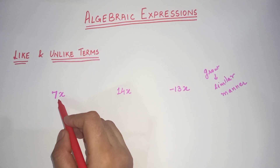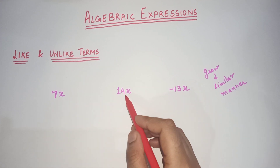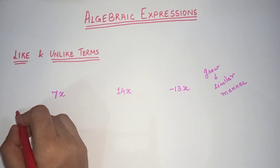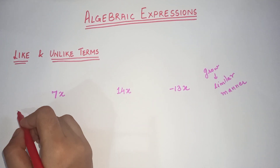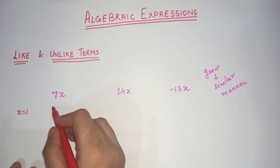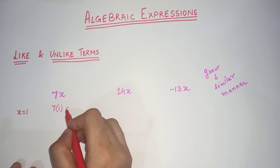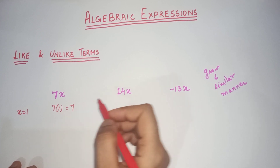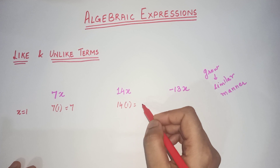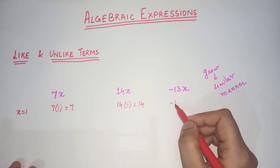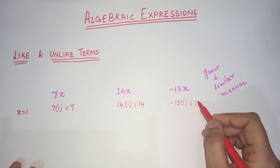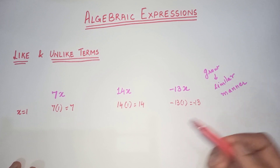We will take some values of x and see how these terms are growing. Let's take x equal to 1. So if x is 1, then 7 times 1 is 7, 14 times 1 is 14, and negative 13 times 1 gives a value of negative 13.